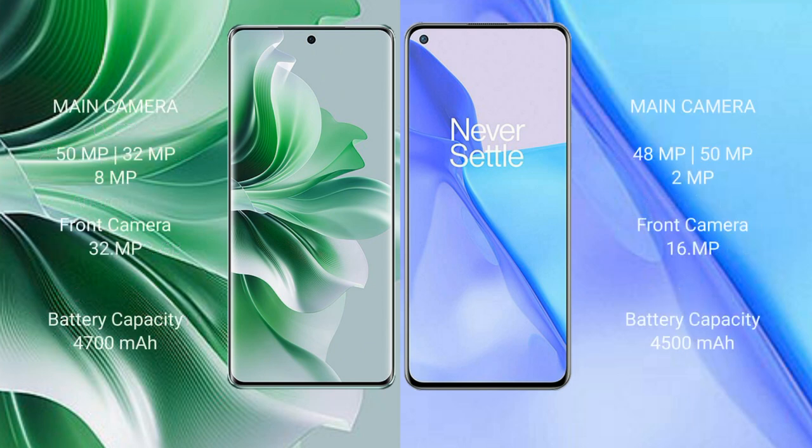Oppo Reno 11 Pro features a triple rear camera setup: 50MP plus 32MP plus 8MP, and a 32MP front camera. OnePlus 9 also features a triple rear camera setup: 48MP plus 8MP plus 2MP, and a 16MP front camera.